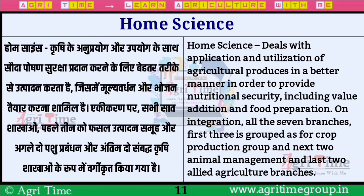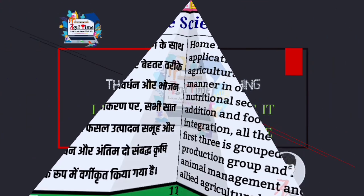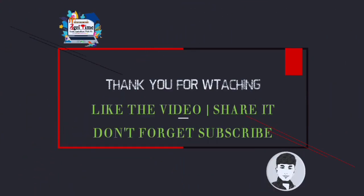अगला branch है Home Science — यह भी Agriculture का एक branch है। इसके अंतर्गत Krishi के अनुप्रयोग और उपयोग के साथ पोषण सुरक्षा प्रदान करने के लिए बेहतर तरीके से उत्पादन करना है, जिसमें मूल्य वर्धन और भोजन तैयार करना शामिल होता है। एकीकरण पर — पहले तीन साखाओं को फसल उत्पादन, अगले दो को पशु प्रबंधन, और अंतिम दो को संबंधित Krishi साखाओं के रूप में वर्गीकृत किया गया है, जिसमें Home Science भी शामिल है। So friends, ये थे कुछ प्रमुख साखाएं — अगर वीडियो पसंद आई तो like कीजिएगा, channel पर नए हैं तो subscribe जरूर कीजिएगा।